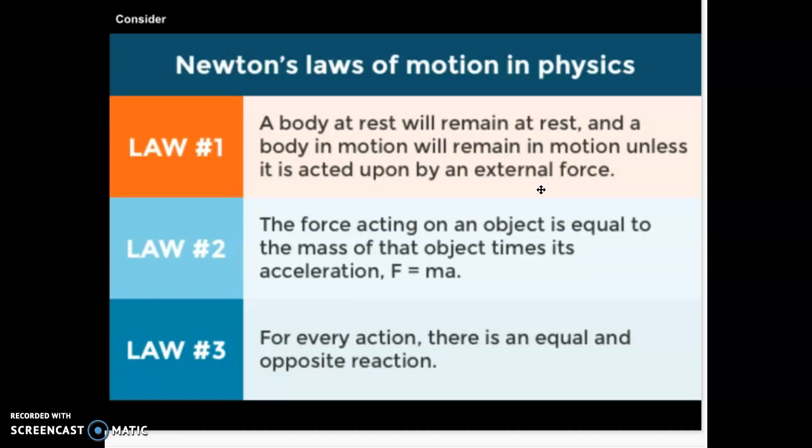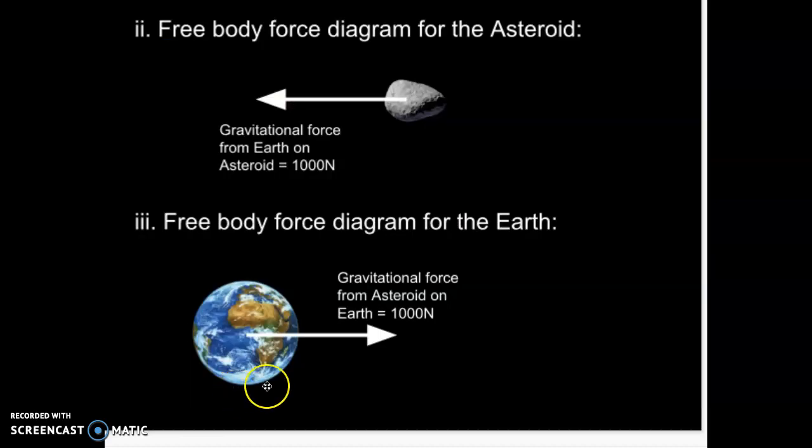Now, why does this relate to free body diagrams? Because free body diagrams only ever tell you about one object. They show all the forces that are acting. You should be able to tell from a free body diagram whether it's accelerating or not. If there is a resultant force acting, then it will accelerate.